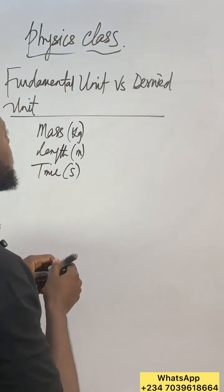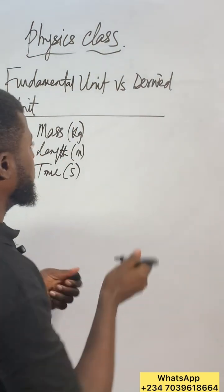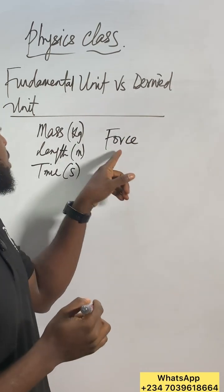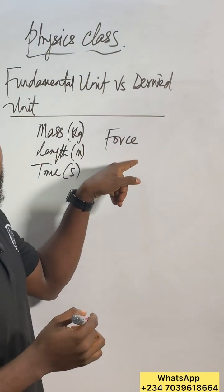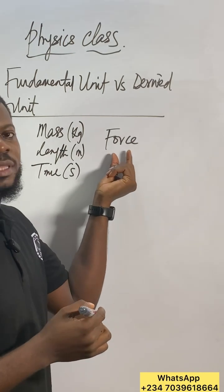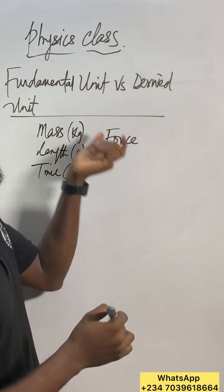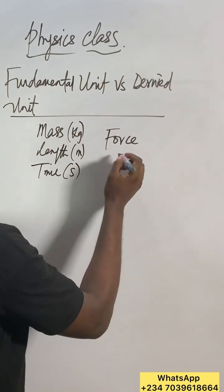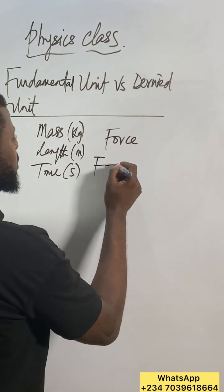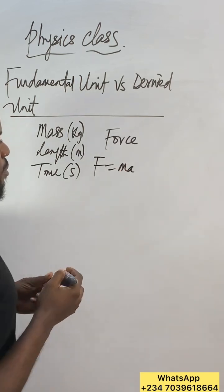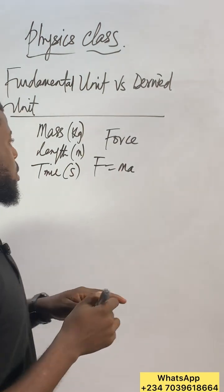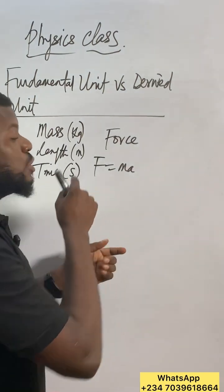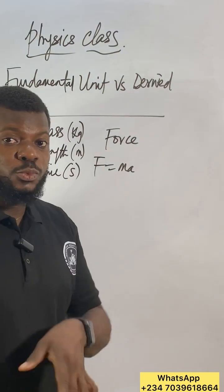But when you talk about derived quantities, like if you consider force, this force has its own derived fundamental units. Everything about it will be derived. For example, from Newton's second law of motion, force is the product of mass times acceleration. If you check the unit of this force, you get the unit as Newton. Newton is a derived unit of this force.